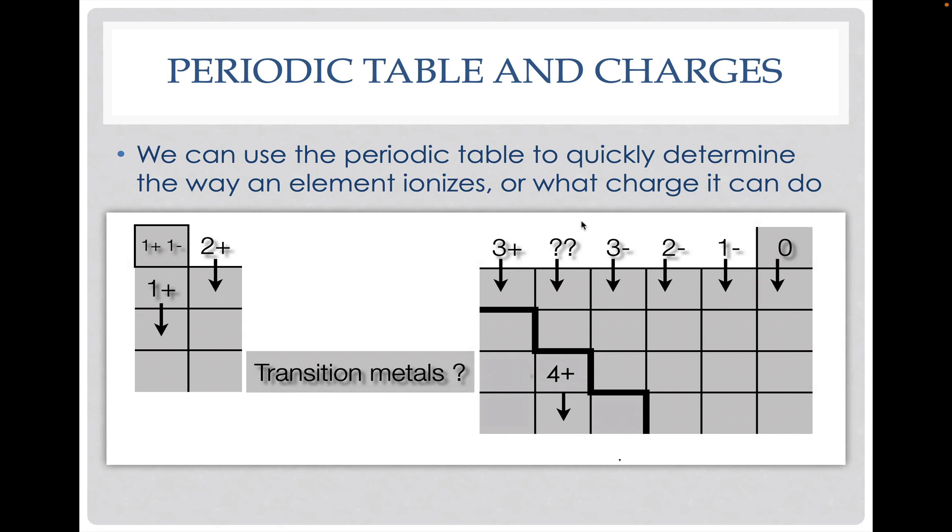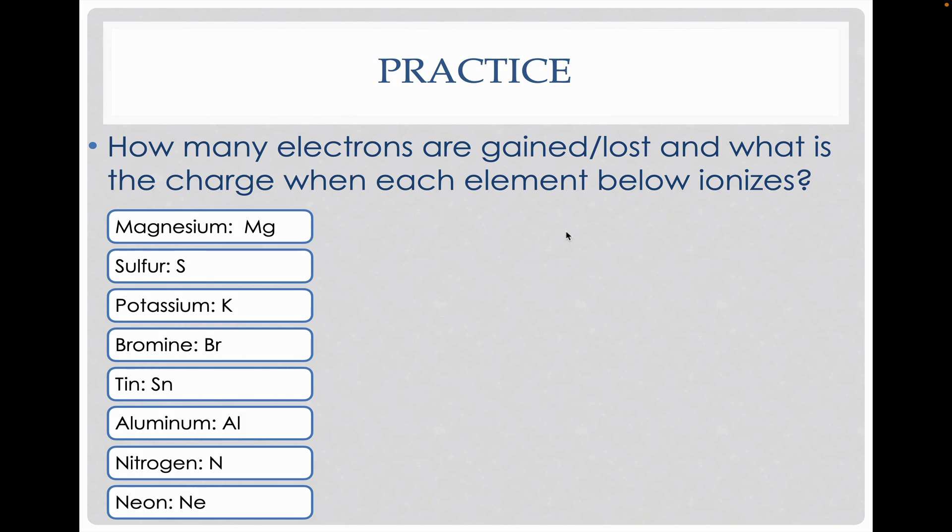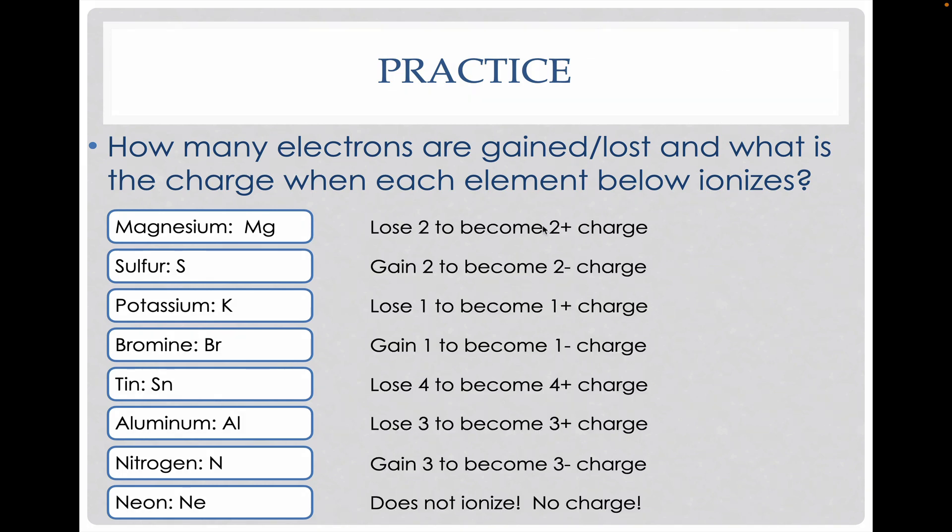You can take a look and actually do some additional practice with this. So magnesium, because it's in the second group, is going to lose two electrons to become a plus two charge. Sulfur is going to gain two electrons to become a negative charge because it's in group 16.